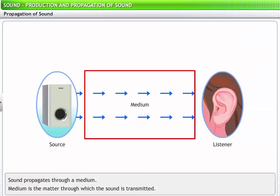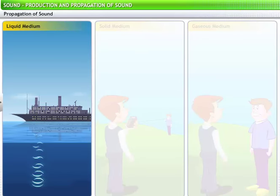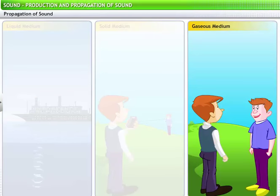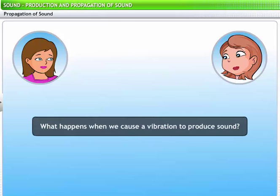To reach your ear, sound needs to propagate from the source to you through a medium. A medium is the matter through which the sound is transmitted. A medium can be liquid, solid or gas. So, how does sound travel? Do the particles in the medium travel from the source to the listener? No, not really. To understand the process of the propagation of sound, let's analyze what happens when we cause a vibration to produce sound.